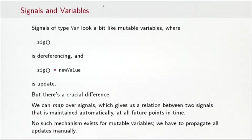You probably noticed that signals of type Var look a bit like mutable variables where sig() is dereferencing, reading the variable, and sig() = newValue is writing the variable or update. But there's a crucial difference. We can map over signals which gives us a relation between two signals that's maintained automatically at all future points in time. Whereas for variables, no such mechanism exists, we have to update all variables manually whenever some dependent variable changes.